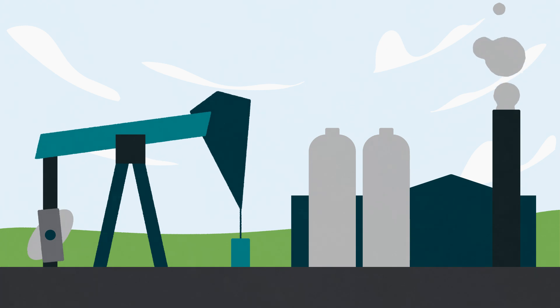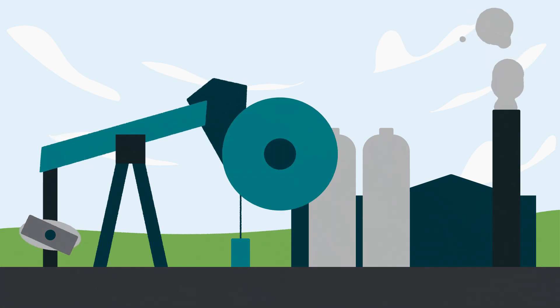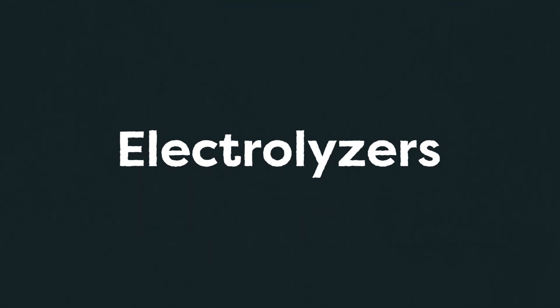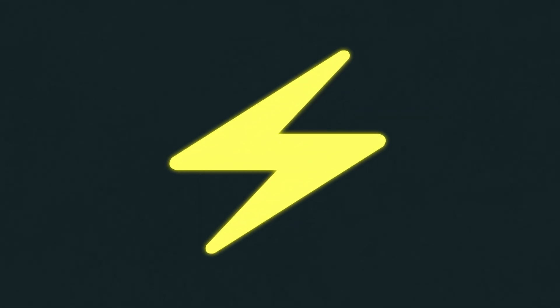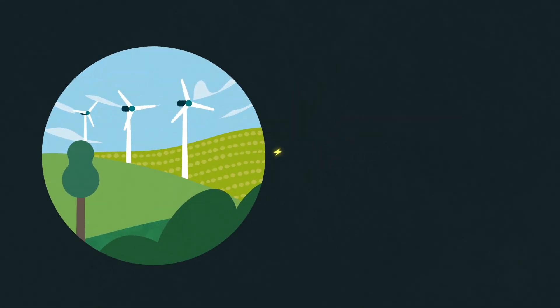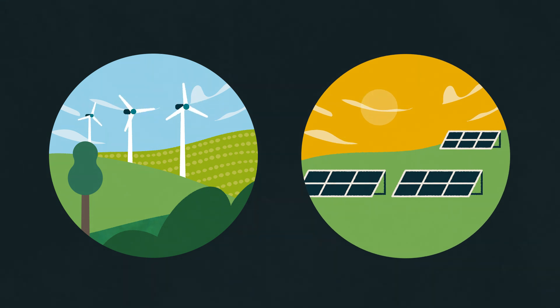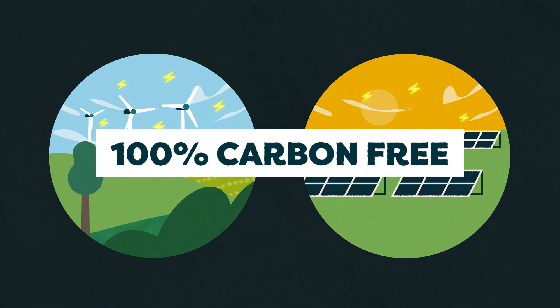Fortunately, there are ways to generate hydrogen without fossil fuels. Here at Berkeley Lab, our scientists are building devices called electrolyzers that split water molecules to produce hydrogen gas. These electrolyzers can be powered by electricity from wind and solar farms. When the hydrogen is later used in a fuel cell, the power generated is completely carbon-free.